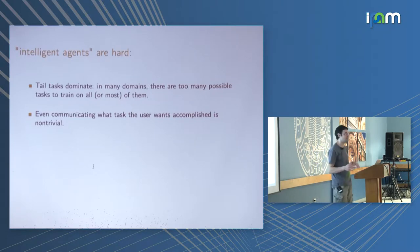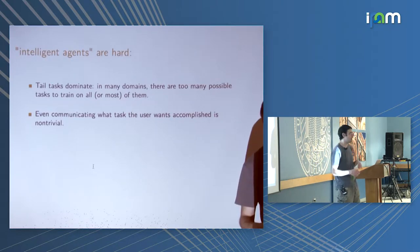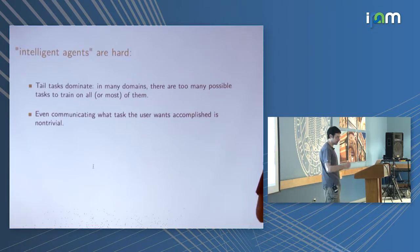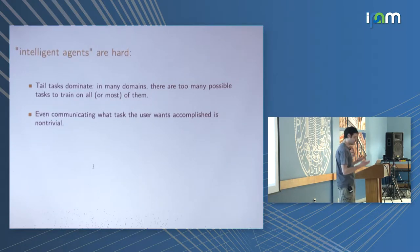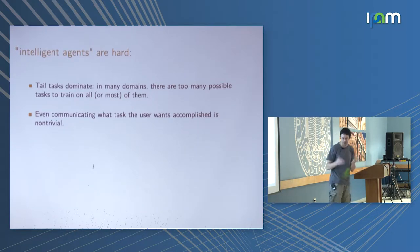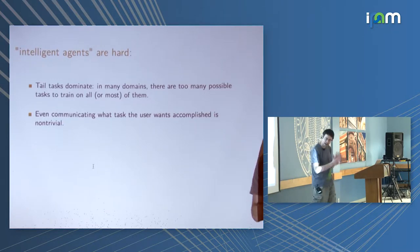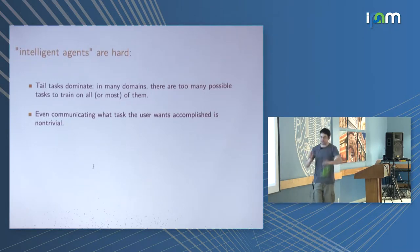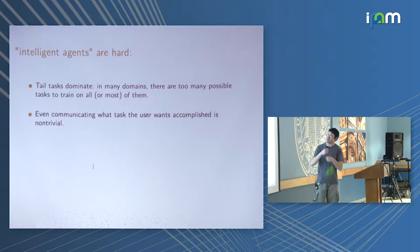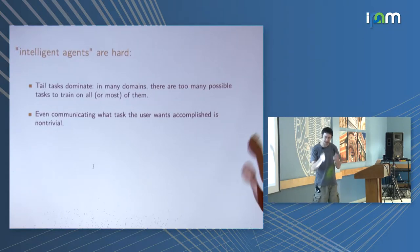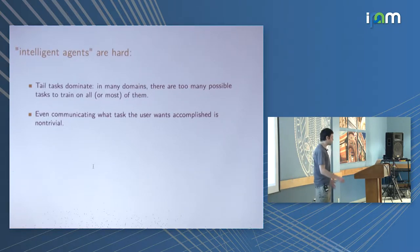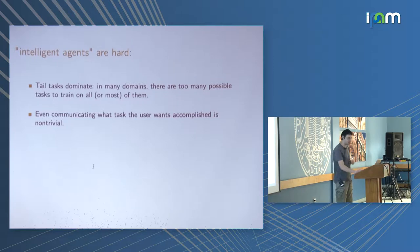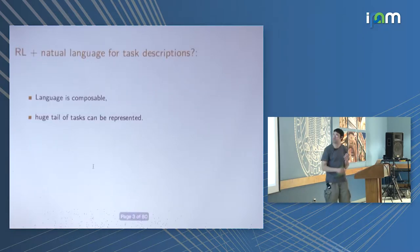There's maybe one environment that the agent lives in. If it's Alexa, it lives in your house and has access to the web. It might have one environment, but you expect it to be able to do lots of different tasks. In fact, usually there are too many tasks to train on all of them, and even communicating what you want the thing to do is hard.